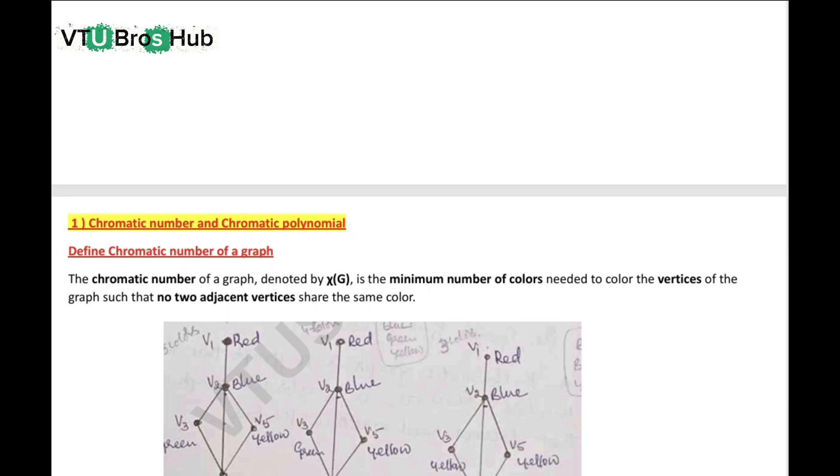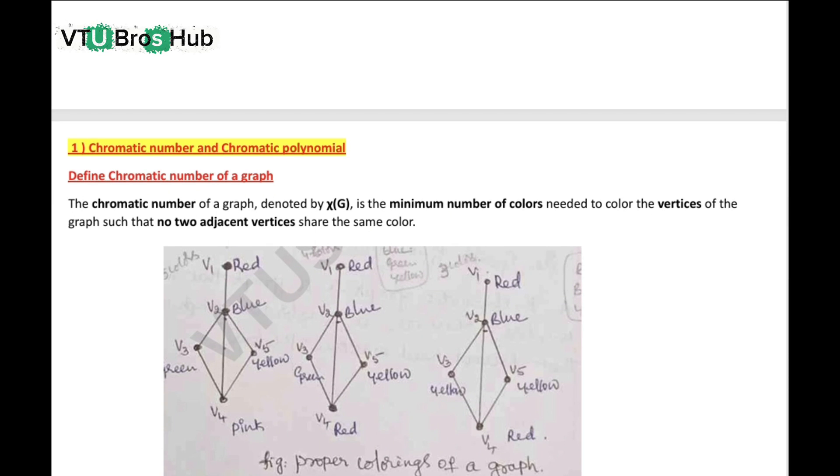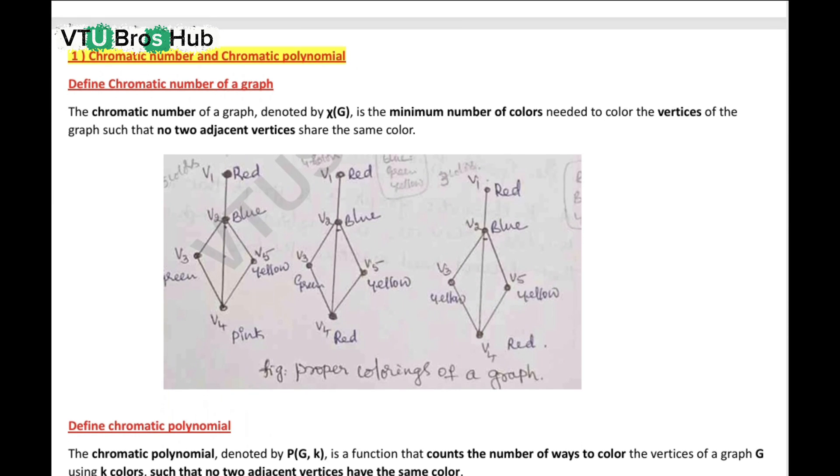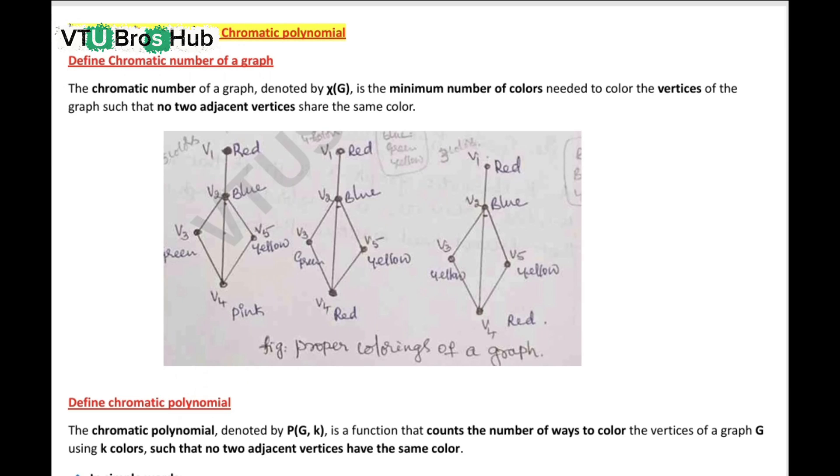Define chromatic number and chromatic polynomial. What is the chromatic number of a graph? It is the minimum number of colors needed to color the vertices, so that no two adjacent vertices share the same color.